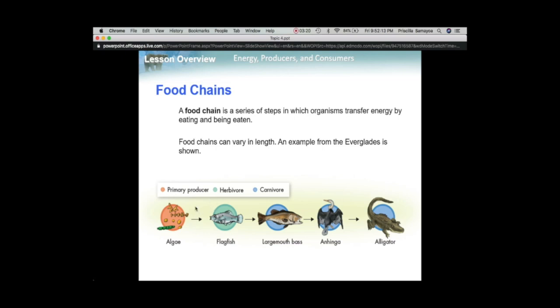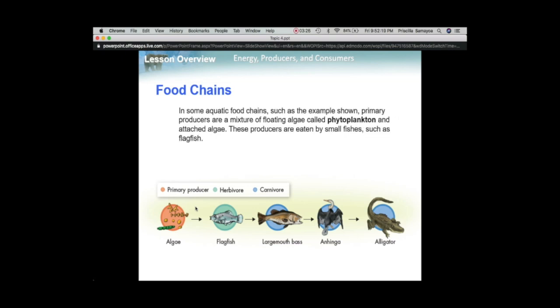It's there to tell you that the fish is getting the energy from the algae. Each of these arrows represents energy flow in a system. In a food chain, it is one-way energy flow. In an aquatic food chain, like the one you have right here, this algae specifically would actually be called phytoplankton.